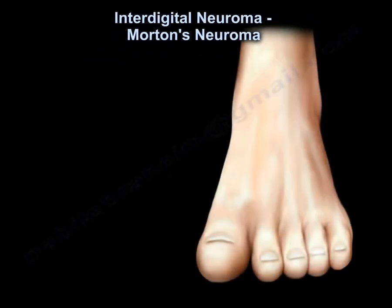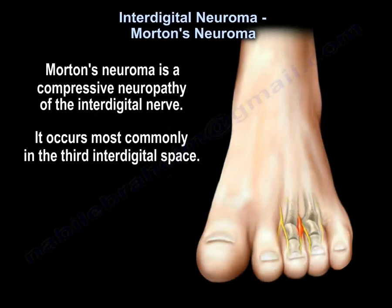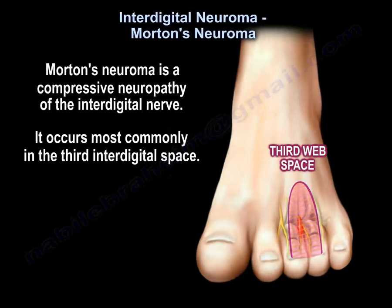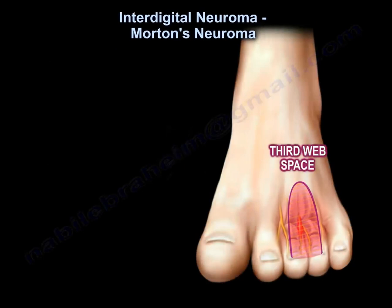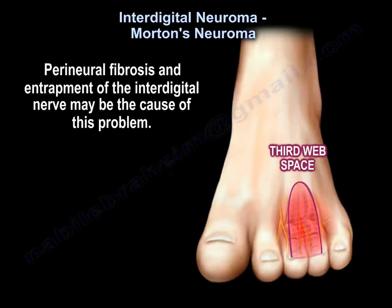Interdigital Neuroma, also known as Morton's Neuroma, is a compressive neuropathy of the interdigital nerve. It occurs most commonly in the third interspace. Perineural fibrosis and entrapment of the interdigital nerve may be the cause of this problem.